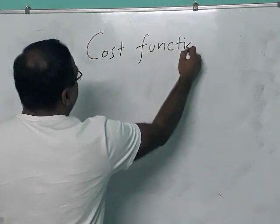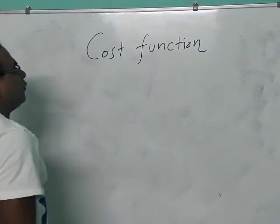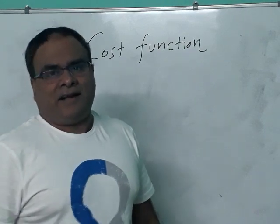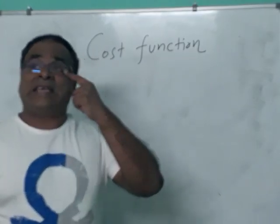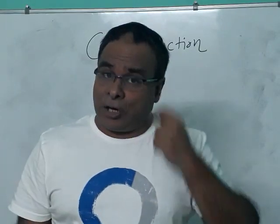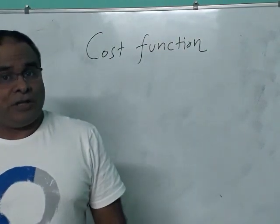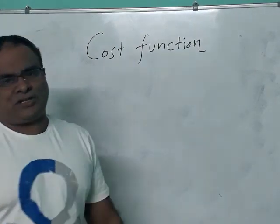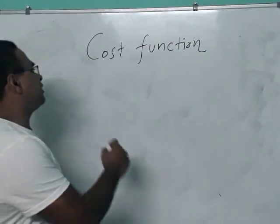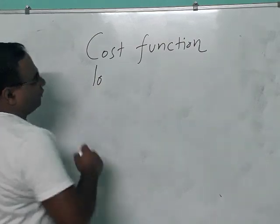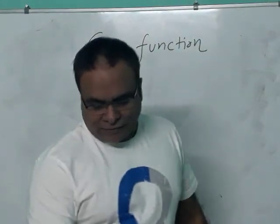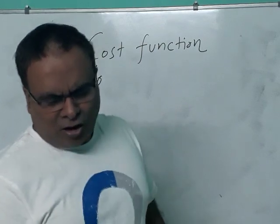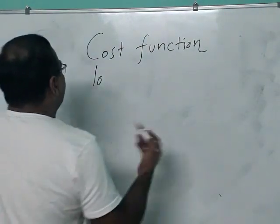It is an optimization algorithm to find out the minimum of a function — which function? It is the cost function. Cost function, or sometimes we call it as loss function, error function, or objective function. All these terms are somewhat similar.